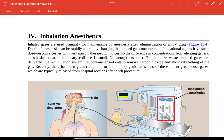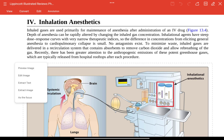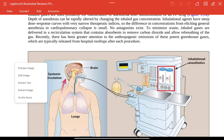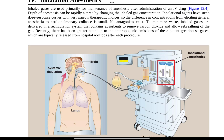Inhalation anesthetics — inhaled gases — are primarily used for maintenance of anesthesia after the administration of an IV drug. They are given through inhalation, reaching the lungs, then the systemic circulation, and into the brain. These are used to minimize dosing variability. Inhaled gases are delivered in a recirculation system that contains absorbents to remove carbon dioxide and allow re-breathing of the gases.